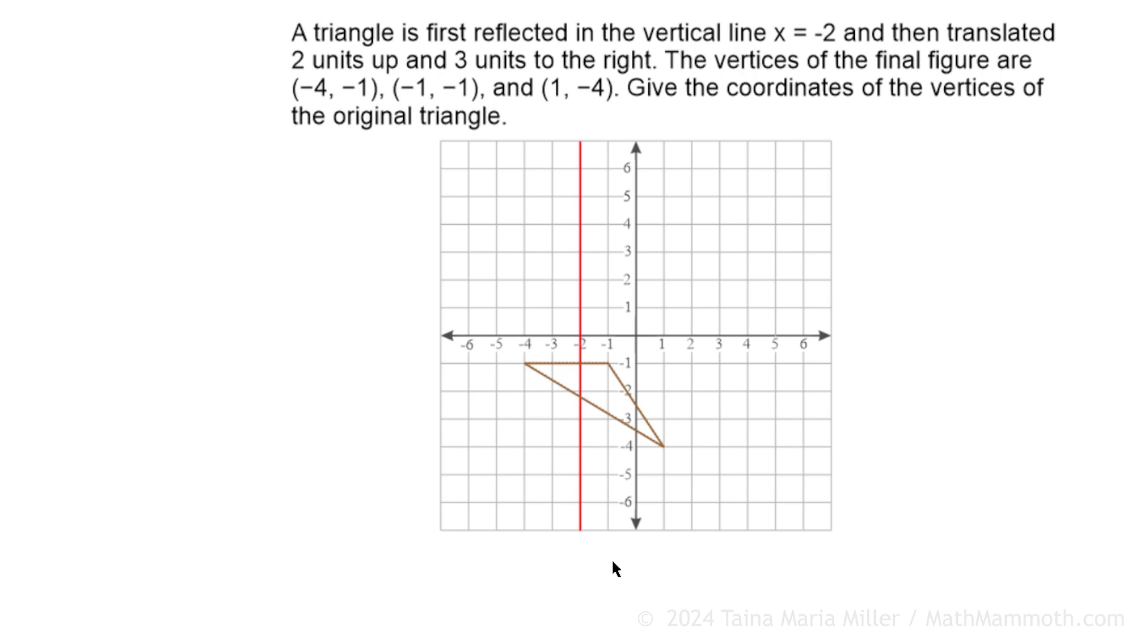The vertices of the final figure are negative 4, negative 1, negative 1, negative 1, and 1, negative 4. Give the coordinates of the vertices of the original triangle. Here it is after those two transformations.